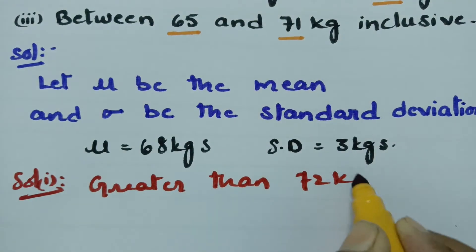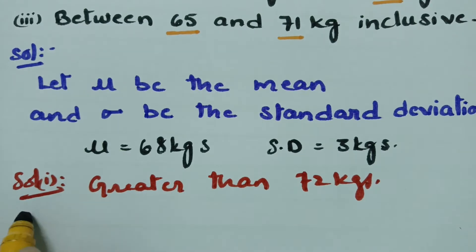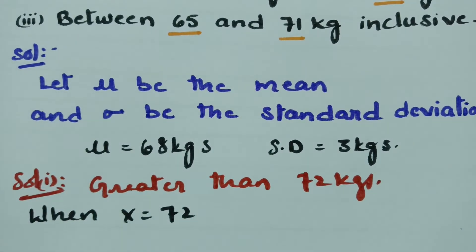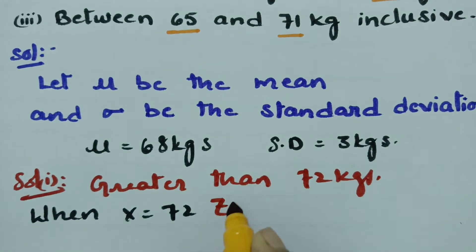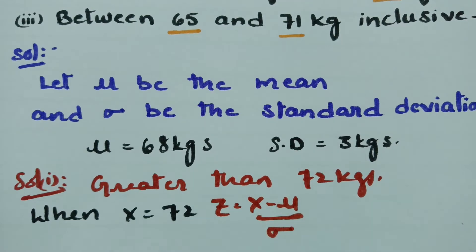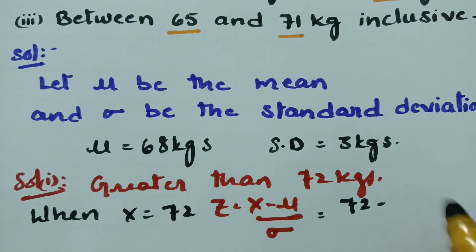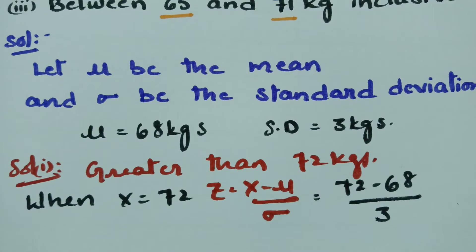When x is equal to 72, what will be the z value? Z is equal to x minus mu divided by sigma. Substituting: z equals 72 minus mu, where mu is 68, divided by sigma which is 3.